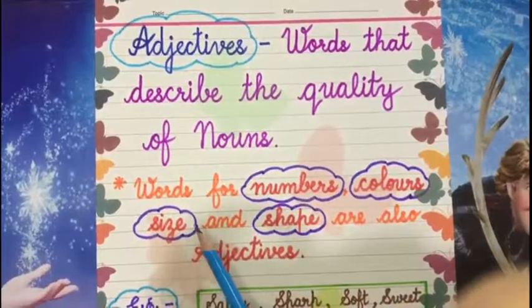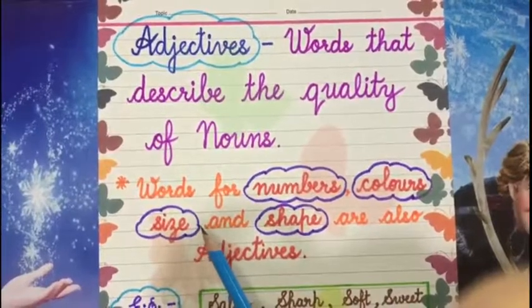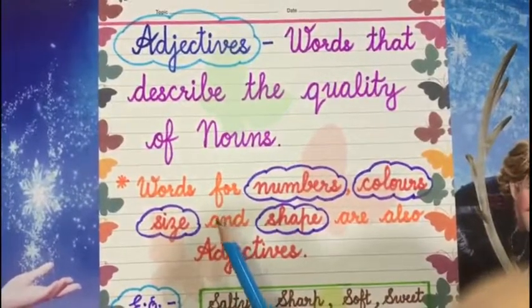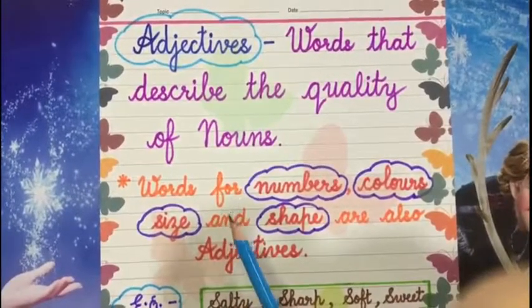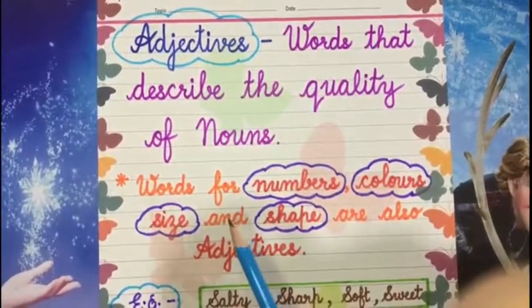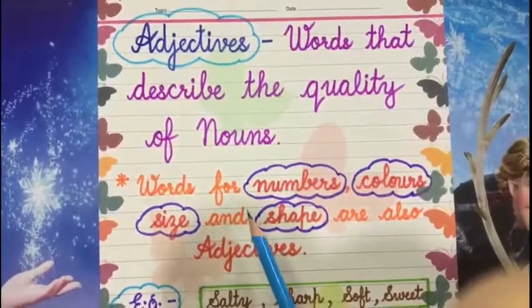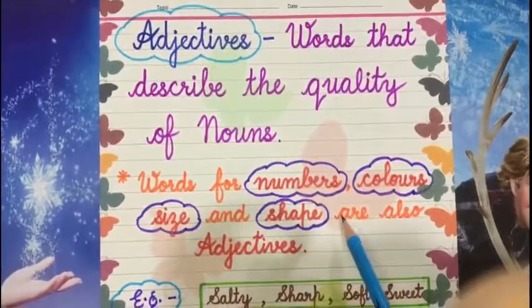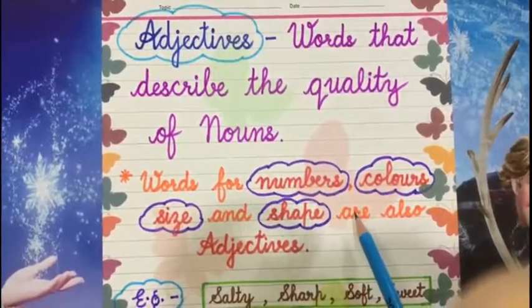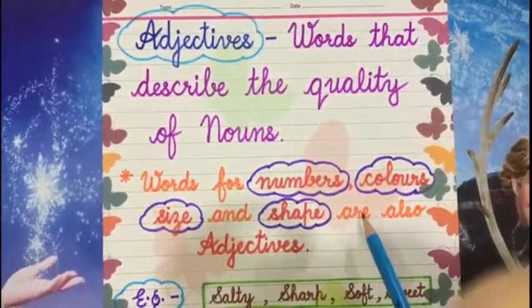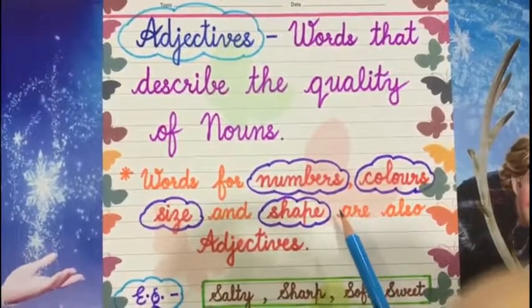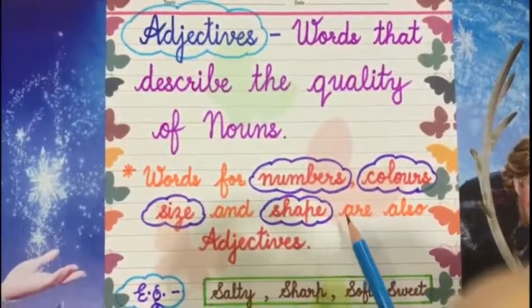Size: big elephant. Big is going to be the adjective because elephant is an animal and it is a noun. Shape: round ball. Ball is a thing, it is a noun. So round is going to be the adjective.